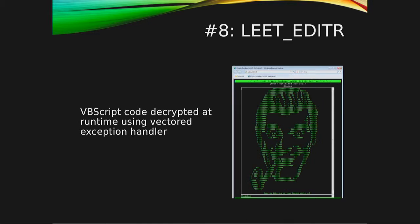The eighth challenge was about using a vectored exception handler to decrypt Visual Basic Script code at runtime. Every byte of the Visual Basic Script code would be decrypted, and then that vectored exception handler would re-encrypt it after use, so every instruction that was executed would first be decrypted and then encrypted again.